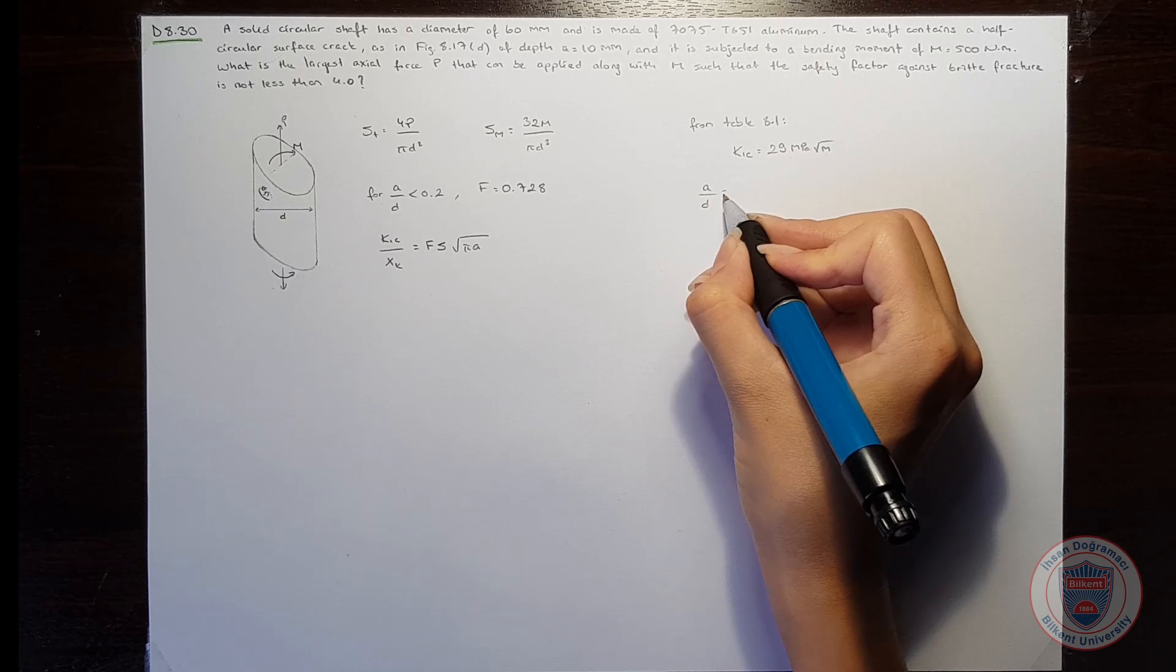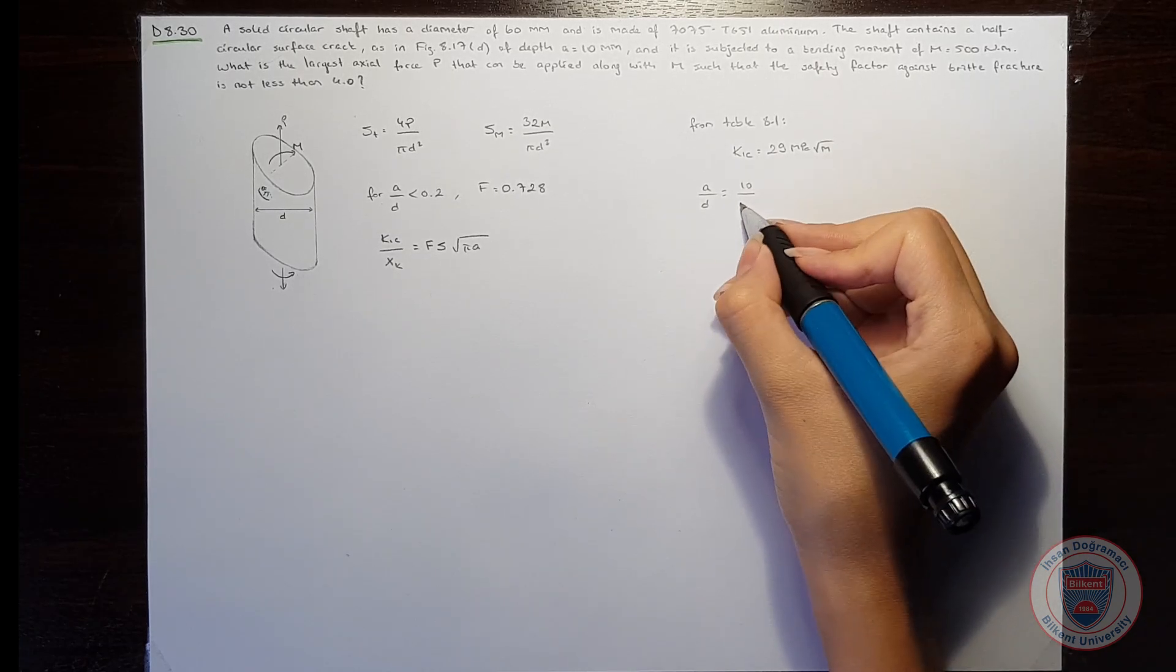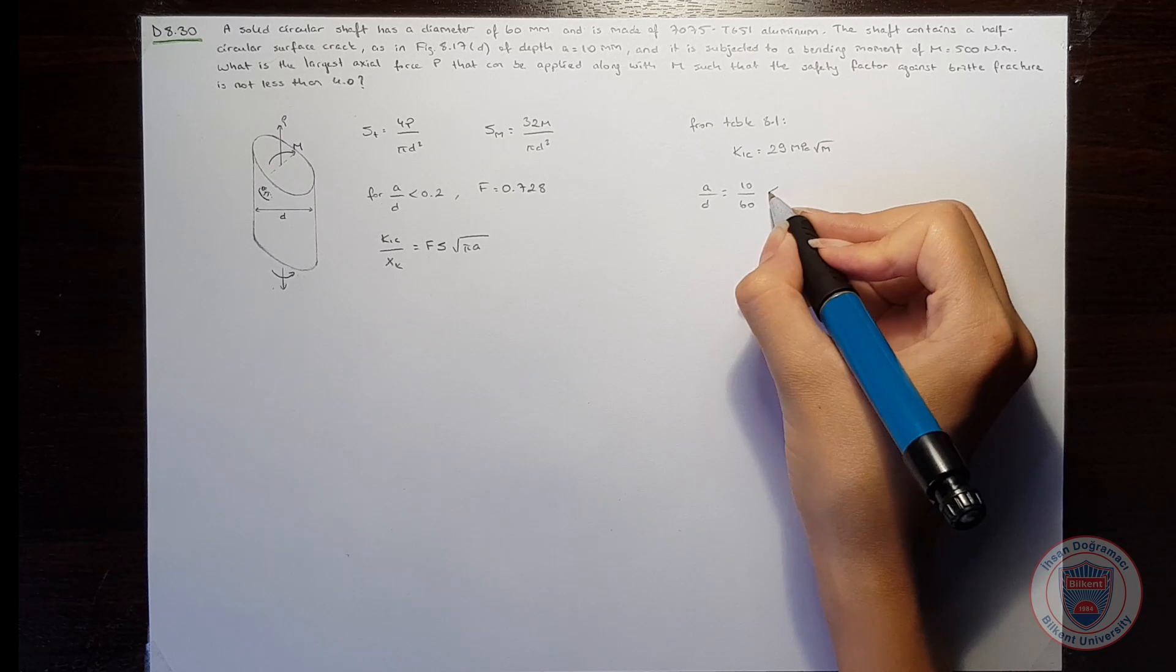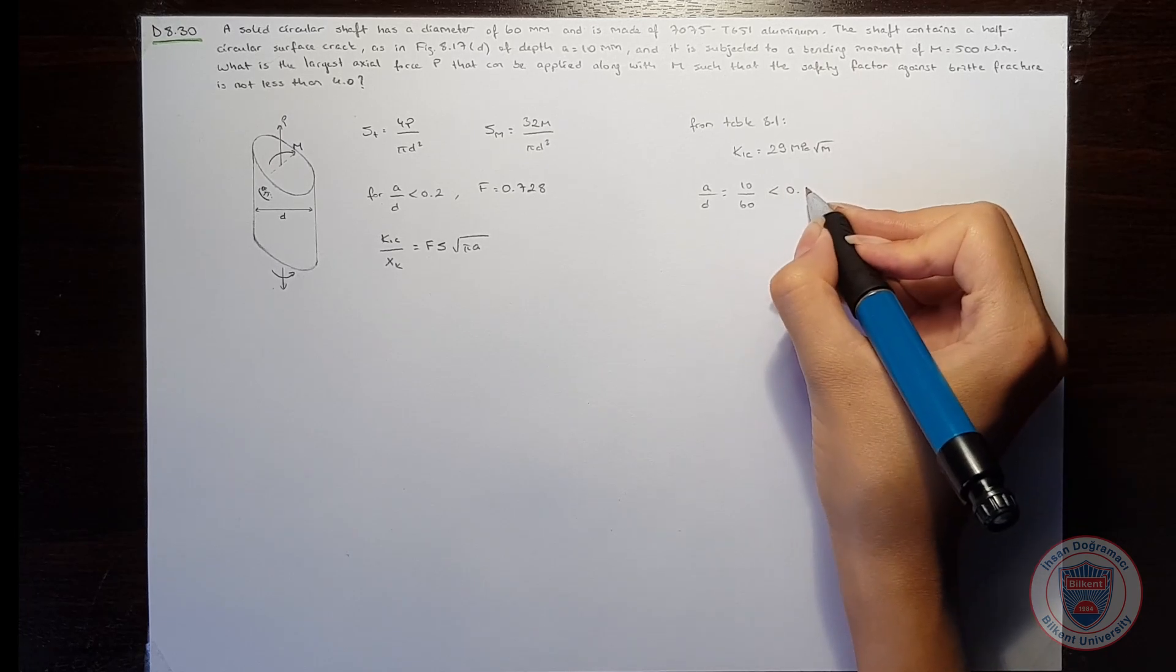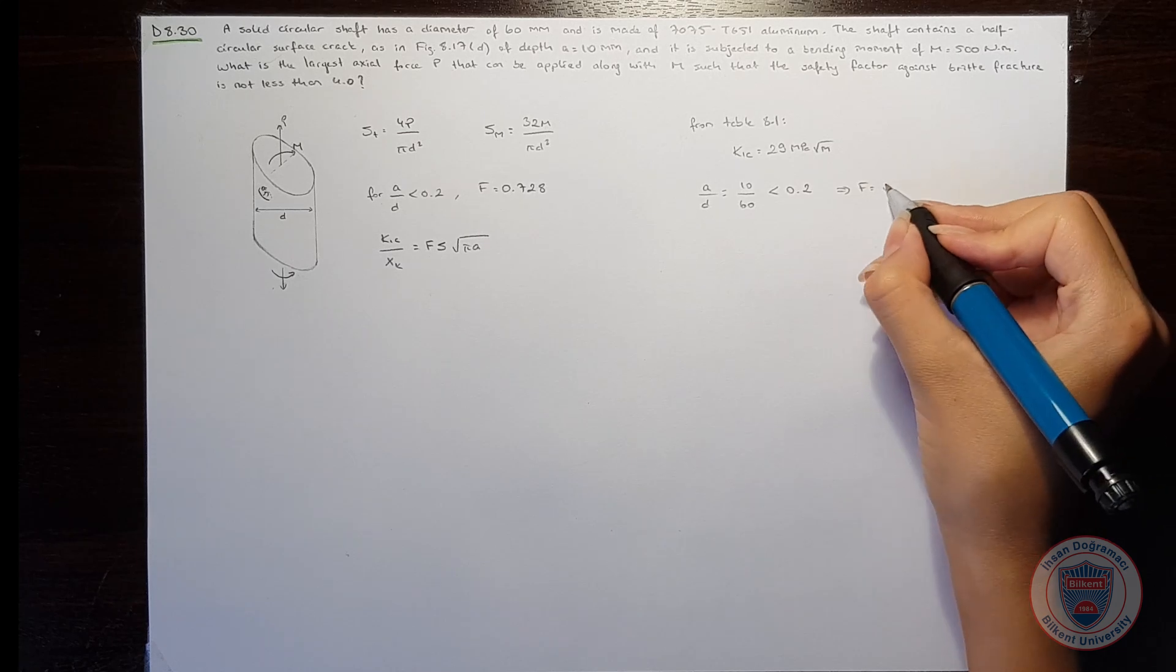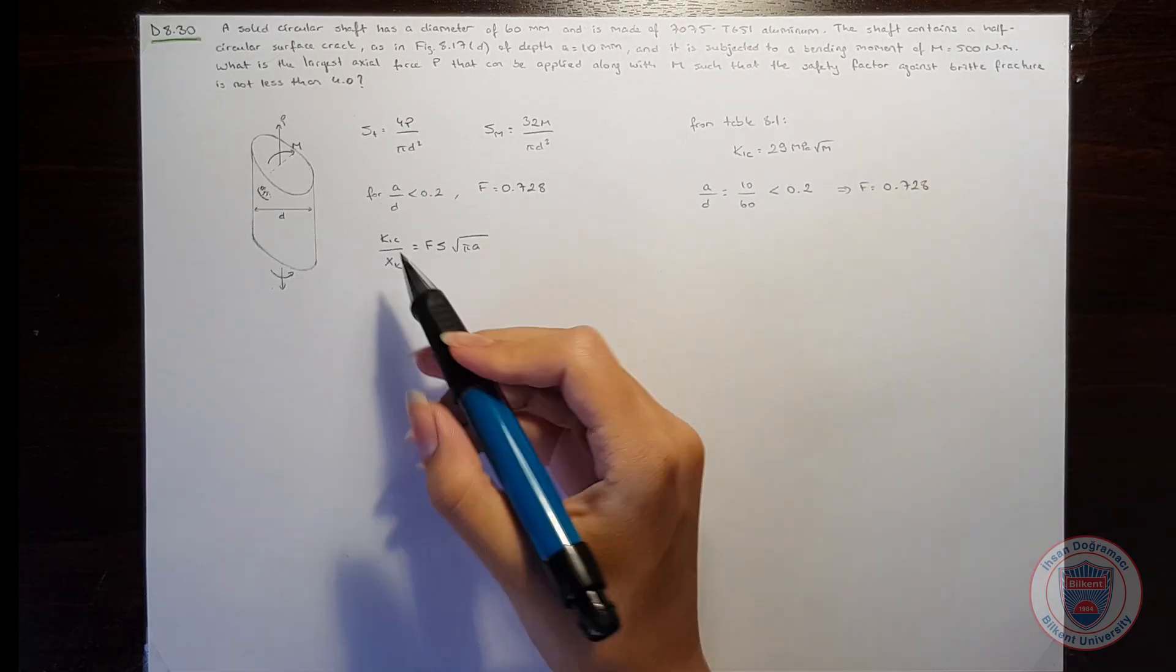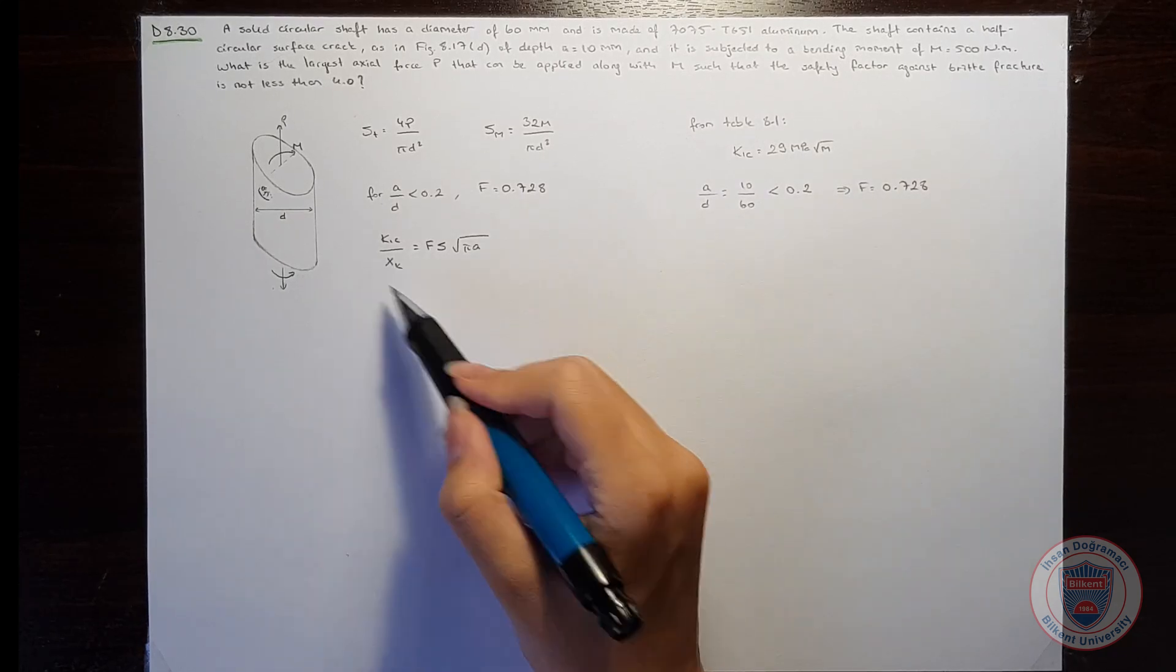And our A over D is 10 over 60, and it is smaller than 0.2, so we can use F is equal to 0.728. So let's substitute the data we have into this equation.